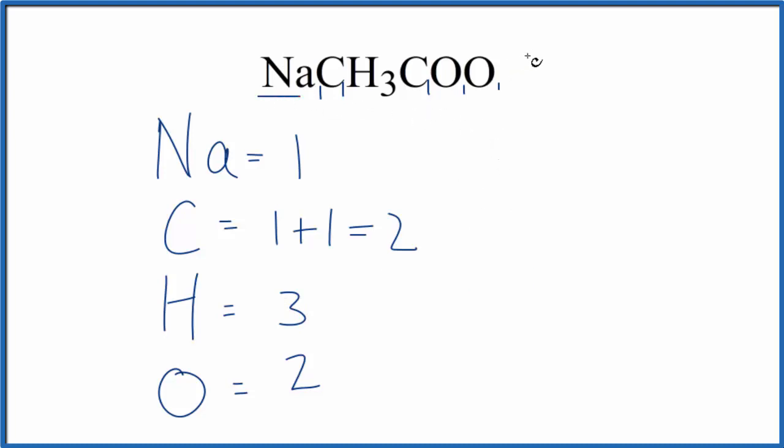Sometimes you'll be asked to figure out the number of sodium atoms in one mole of sodium acetate. To do that we have one sodium atom, we just multiply that by Avogadro's number, 6.02 times 10 to the 23rd. That tells us how many atoms of sodium we have in one mole of sodium acetate.